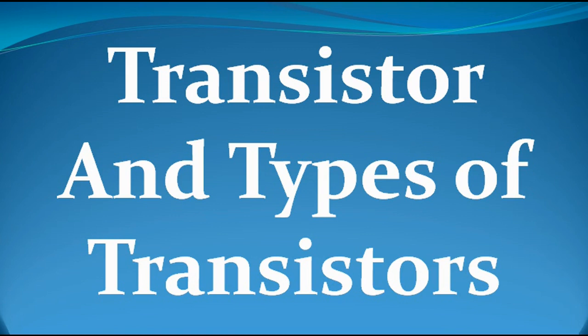Let's go to types of transistors. We will be discussing the types of transistors so that you will really understand them. There are two main types of transistors: number one is Bipolar Junction Transistor, abbreviated BJT, and the second one is Field Effect Transistor, abbreviated FET.